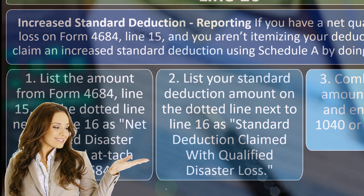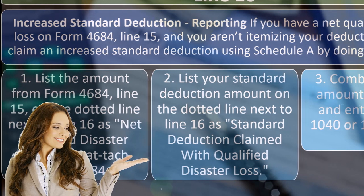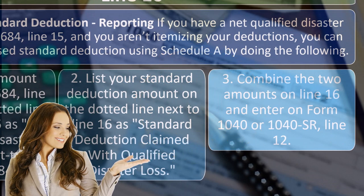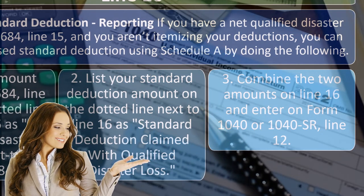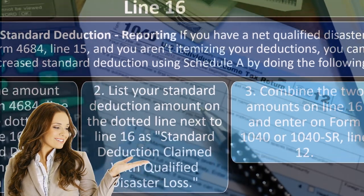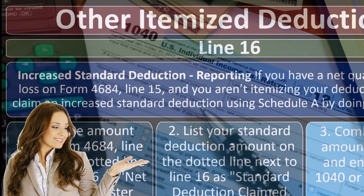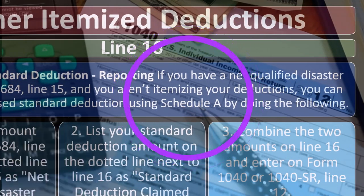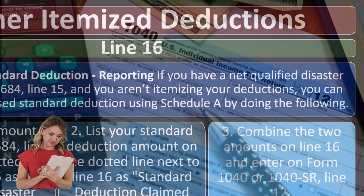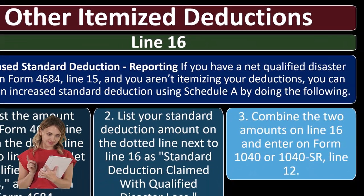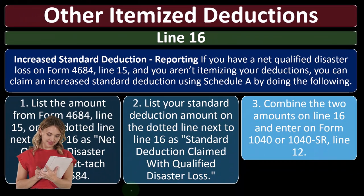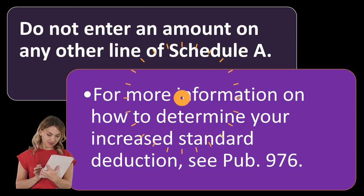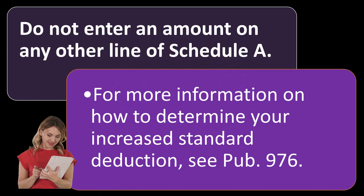So in essence, you're going to use Schedule A, but you're going to add the standard deduction in so that it will help you to clear the standard deduction. When you pull it over to the first page, it will be increased by the standard deduction. We looked at an example of that last time — we might look at it again in the software just to get an idea of it. It's a little funny, a little weird, but it works.